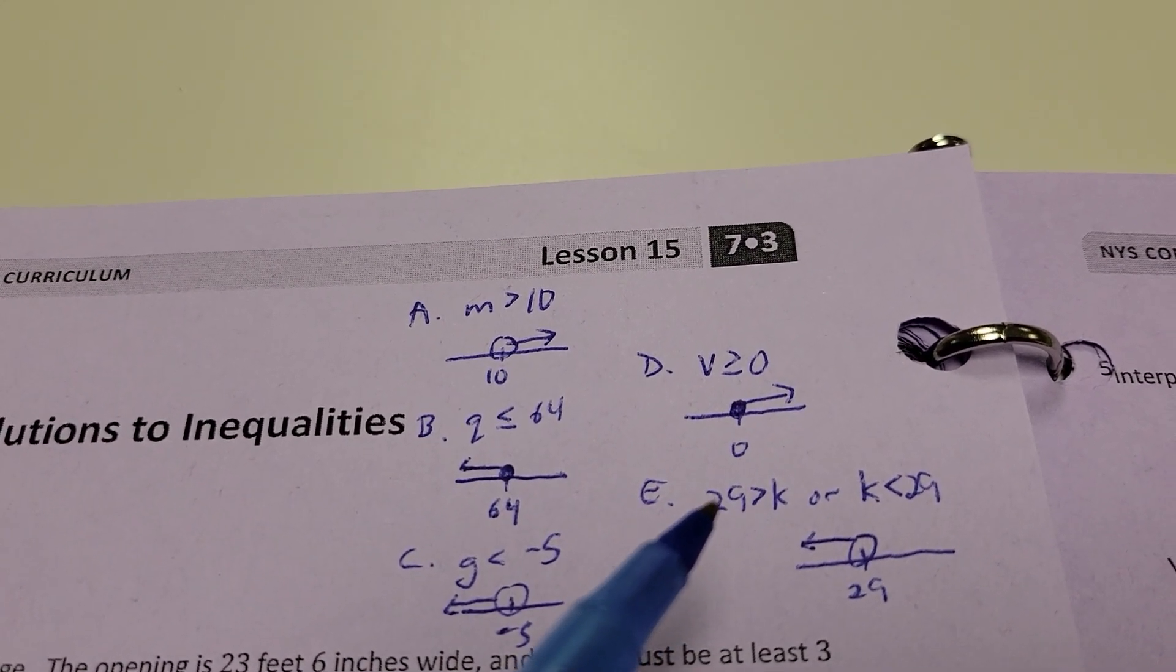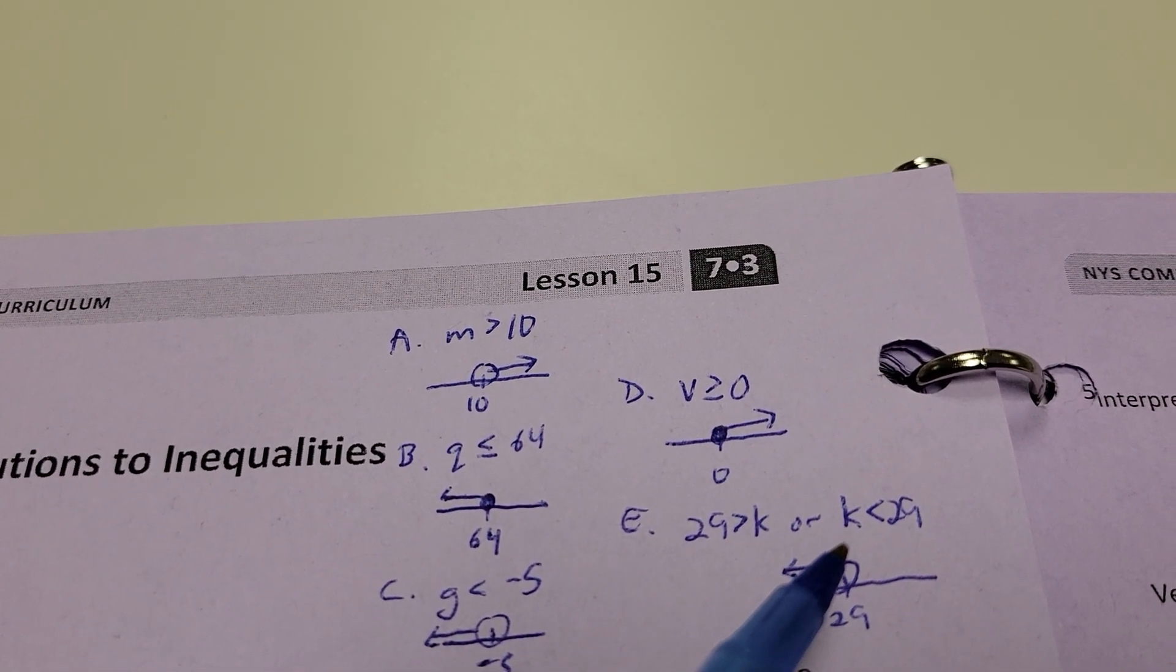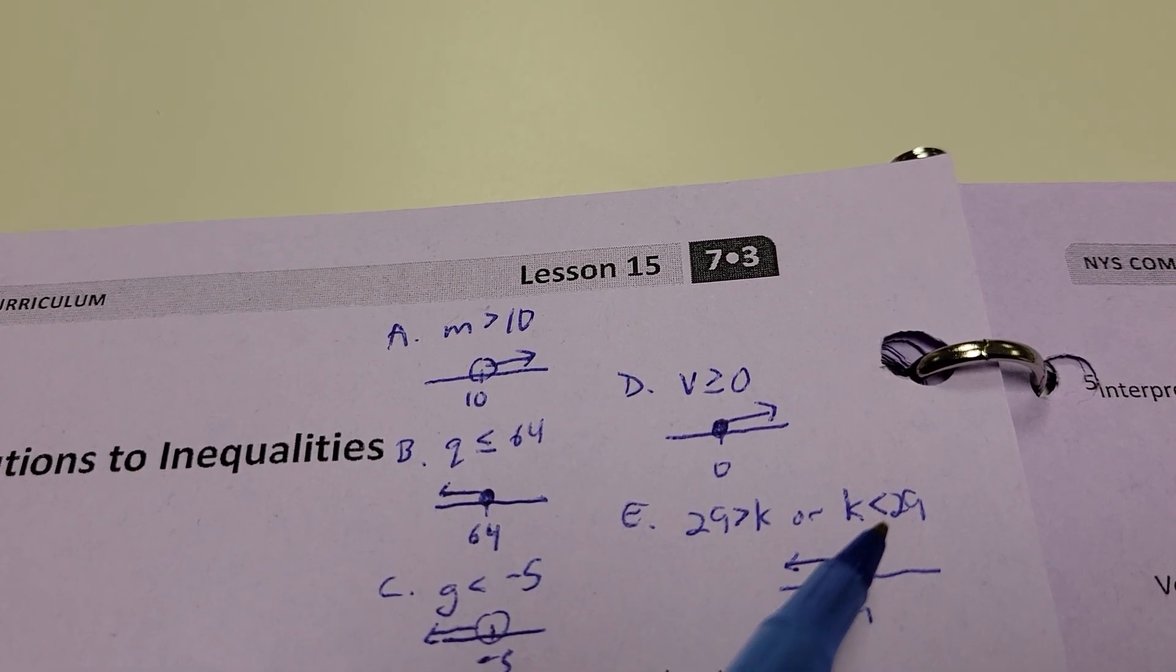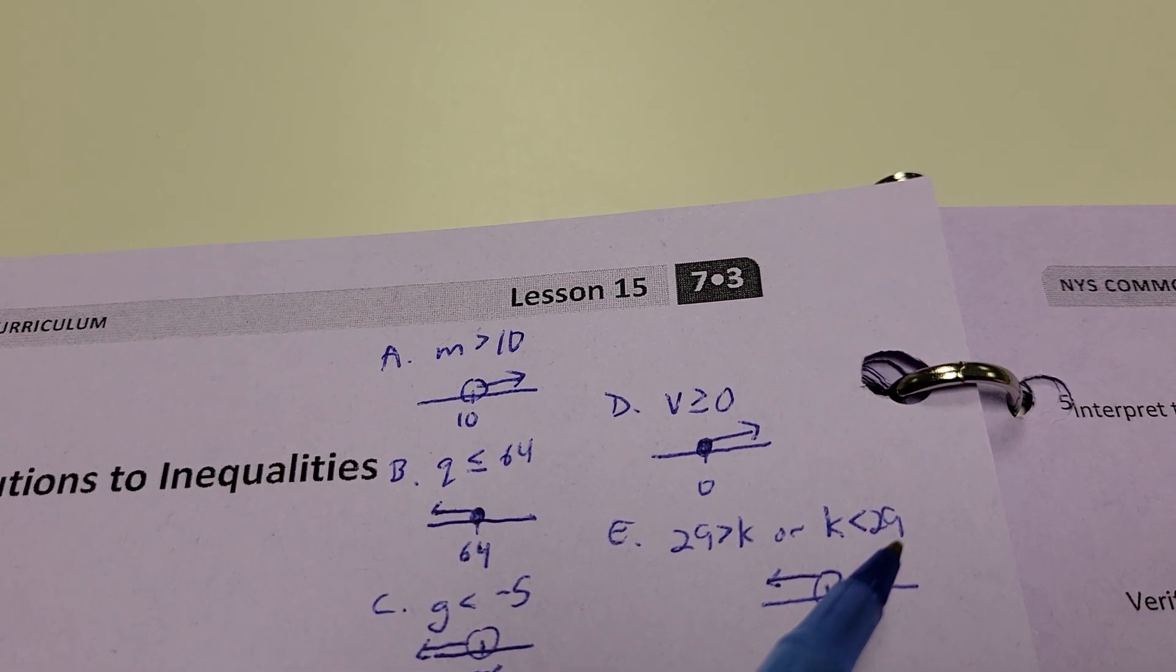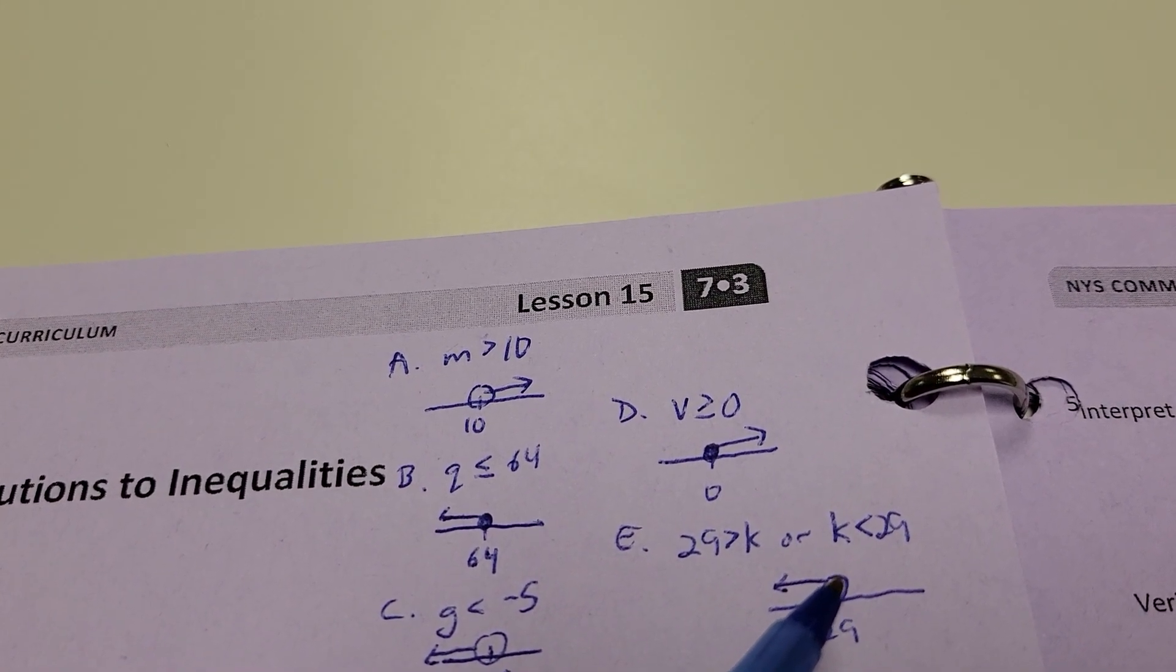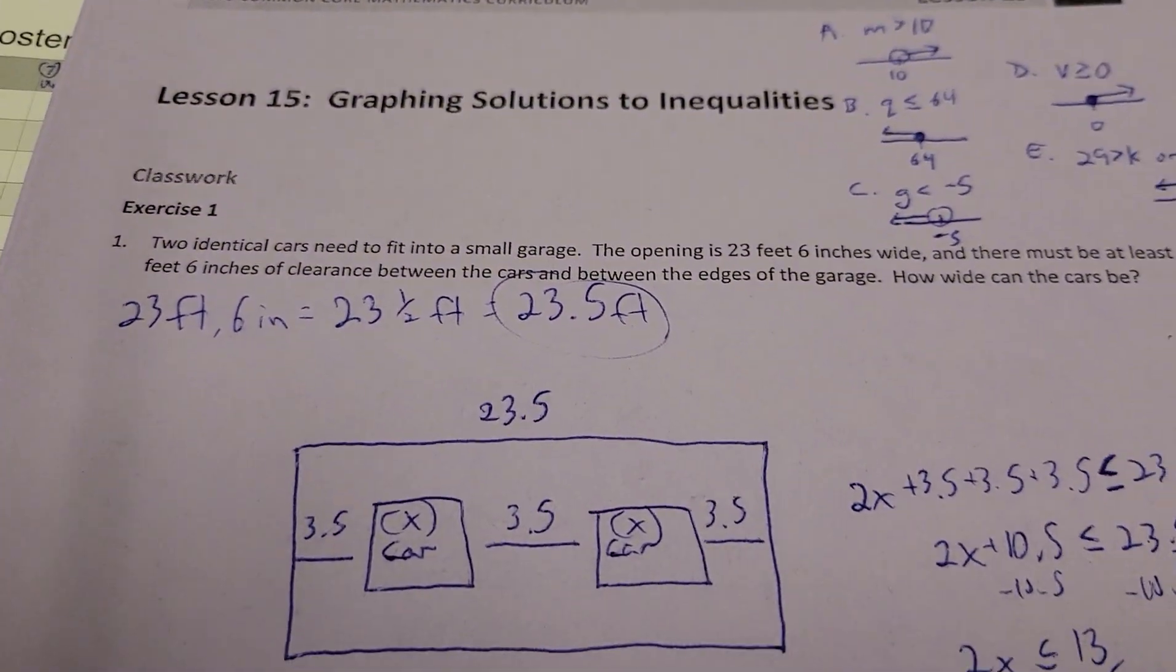Now, when you have situations like this, like 29 is greater than K, and the K is on this side, you can put the K on the left side, but remember that arrow kind of points to the K, and the arrow points to the K here, so K is less than 29. It still wants to eat the 29, just like it does here. So, because there's no bar underneath, it's an empty circle, and K is anything less than 29 moving that way.